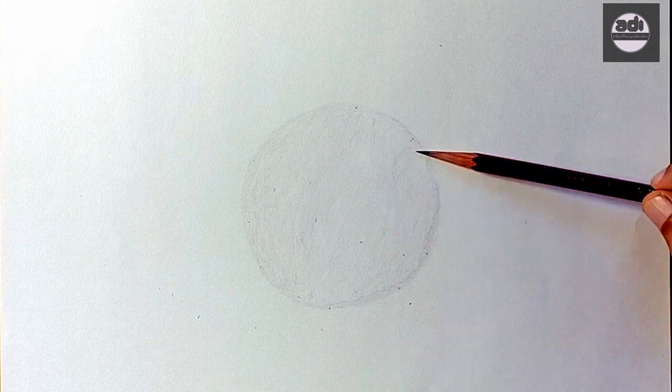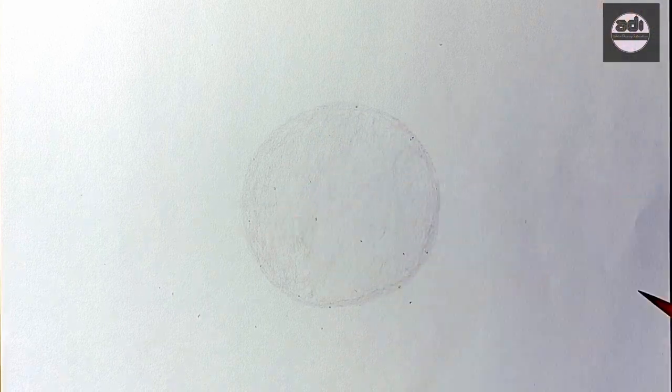For your assignment, you will draw a circle and shade it evenly with a 2H pencil. Then, using a kneaded eraser, you will pick out a highlight.